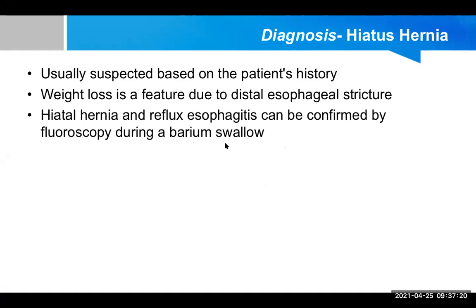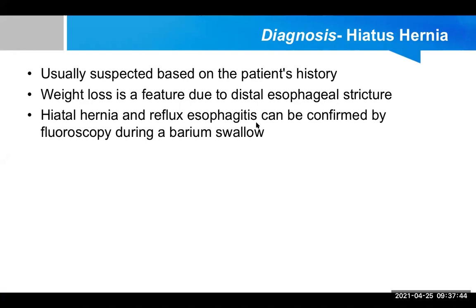Confirmation of diagnosis of hiatal hernia depends on history taking, physical examination, and investigations. The diagnosis is usually suspected based on the patient's history. Weight loss due to distal esophageal stricture occurs only in long-term cases. Hiatal hernia and reflux esophagitis can be confirmed by fluoroscopy during a barium swallow — a continuous X-ray monitoring performed after barium is ingested, clearly showing barium in the thoracic cavity.